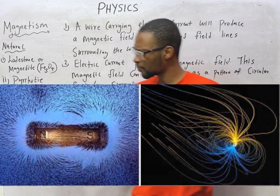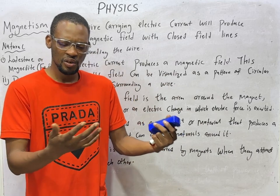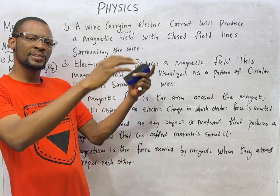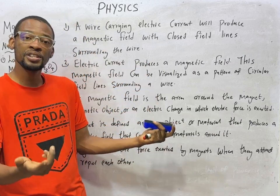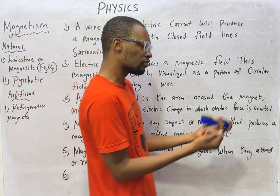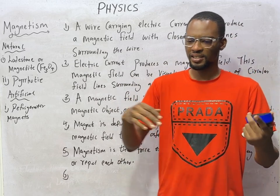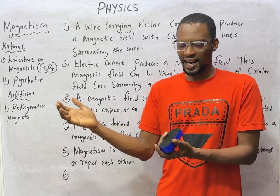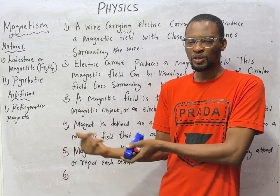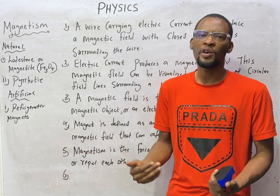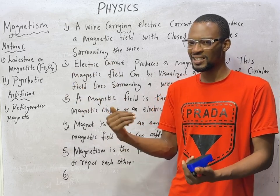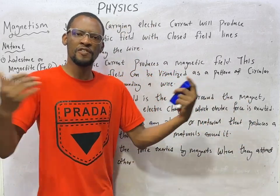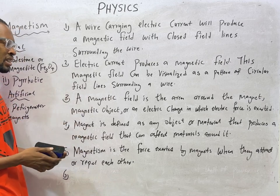A magnetic field is the region around the magnets where the effects of that magnet are experienced. For example, if you are a king, you have your territory where you can say something and people will follow. An Oba of Bini can exert influence in Bini city or Edo state, but cannot exert force or influence on another country or state. So for the Oba of Bini, the magnetic field is Bini — the region where force or influence is experienced.